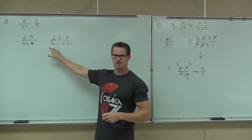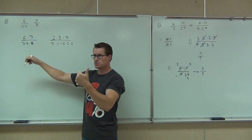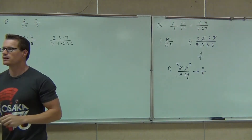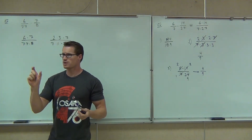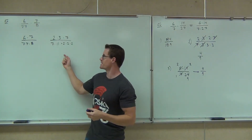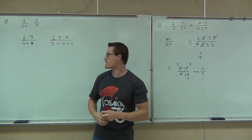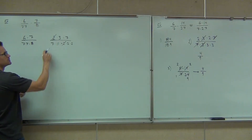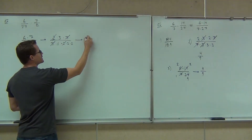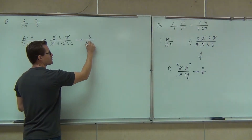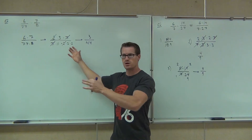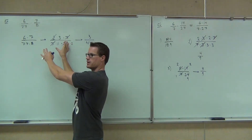6 is 3 times 2. 77 is 7 times 11. 8 is 2 times 2 times 2. Then we cross out all factors that are identical. What I'm showing you is the prime factorization, so I'm going all the way down. We have a couple of 2s and a couple of 7s. We multiply what's remaining: 3 on top, and 11 times 4 is 44 on the bottom. That's as simple as it gets. Once you simplify using this method, there's no possible way to simplify further — it would have been taken care of right there.